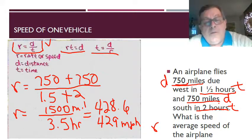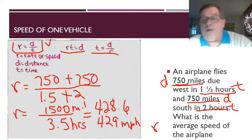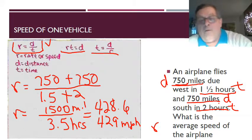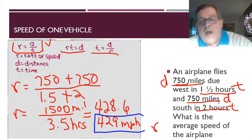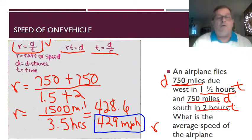This is miles and this is hours, and so we traveled 429 miles per hour. That was the rate and average speed of this airplane.